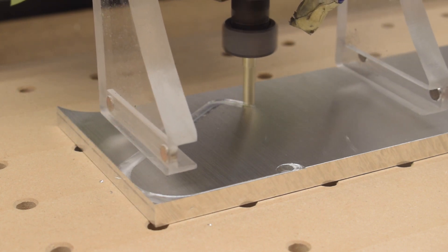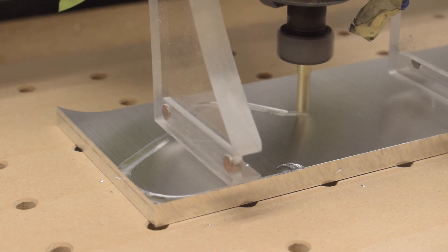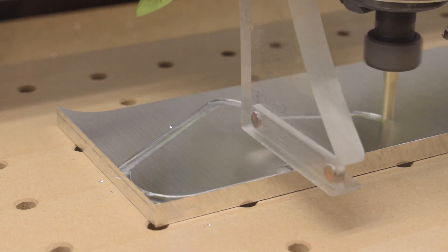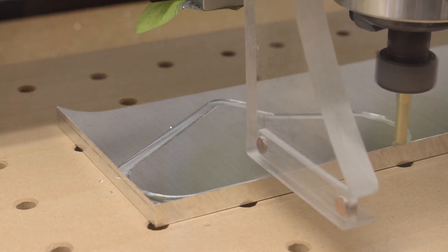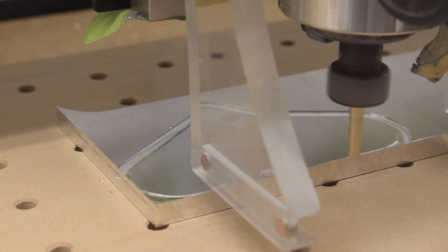For every pass your end mill makes, there is a reaction force from the resistance of that cutting edge shearing through material. Two flutes equals twice the stress on your drivetrain, spindle, and structure, all other things being equal.